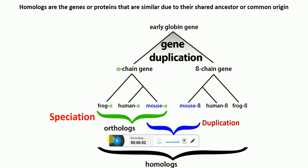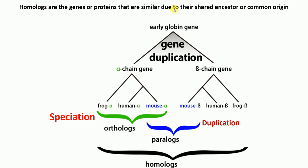In this lecture, I'm going to talk about the concept of orthologs, paralogs, homologs, and analogs — what are the basic differences between these terms? First, homologs: homologs are genes or proteins that are similar due to their shared ancestor or common origin. Basically, homologs are genes or proteins that have a common ancestor.